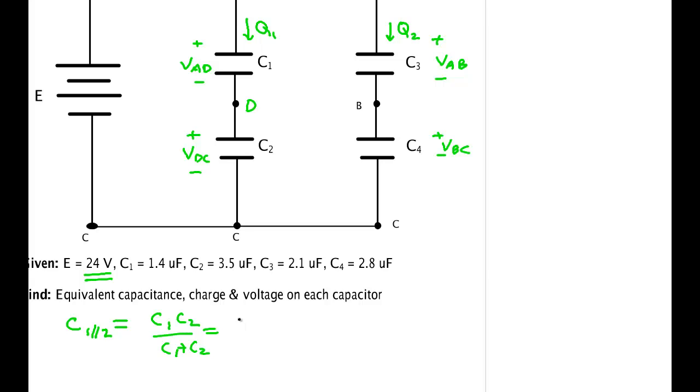That's 1.4 times 3.5 over 1.4 plus 3.5, all in microfarads. We punch that into the calculator: 1.4 times 3.5 divided by 4.9, and we get 1 microfarad. That makes sense - it's less than either of the capacitors we started with.